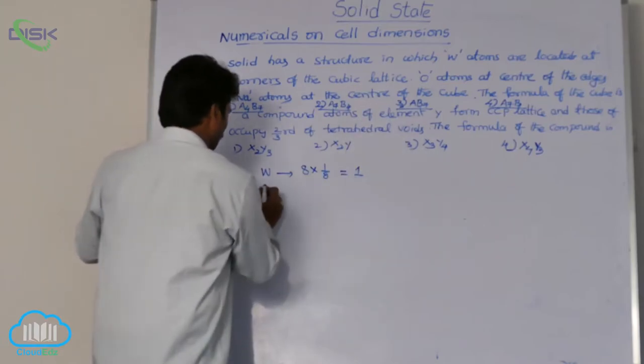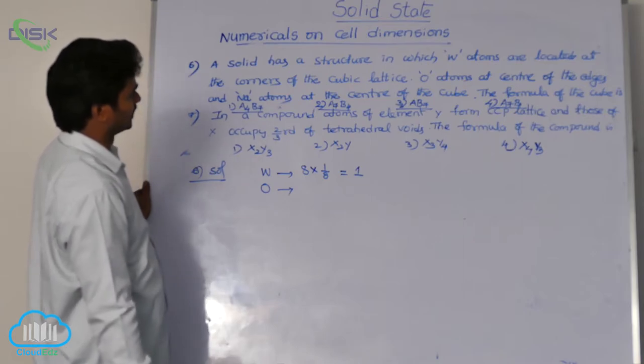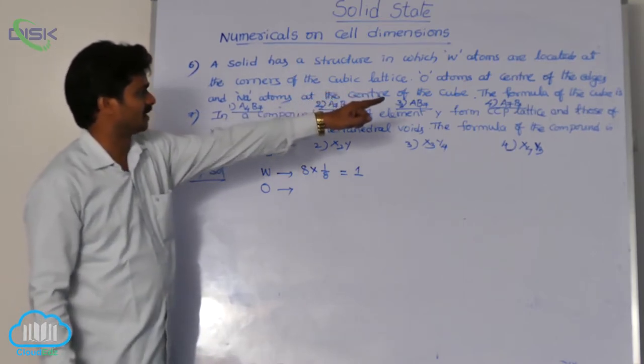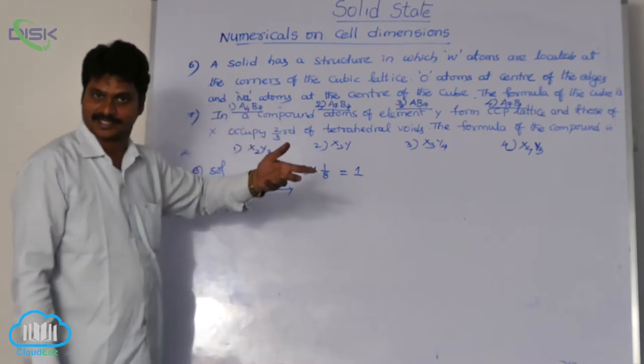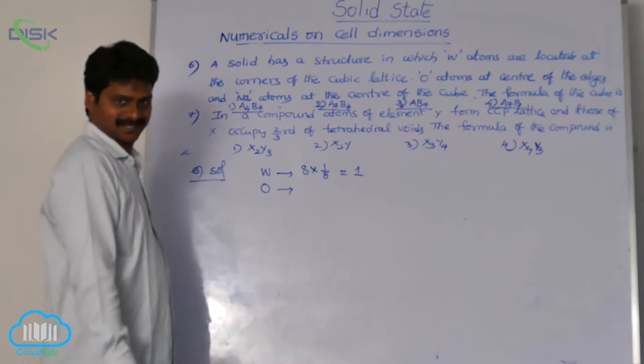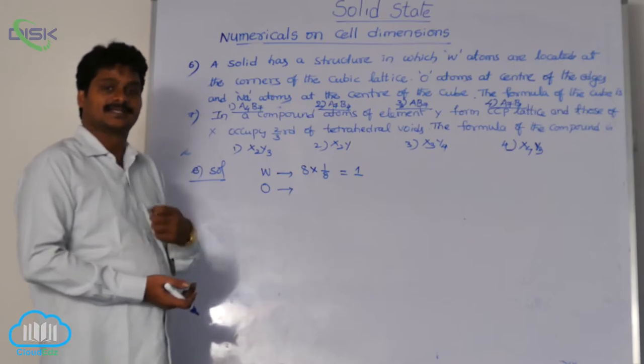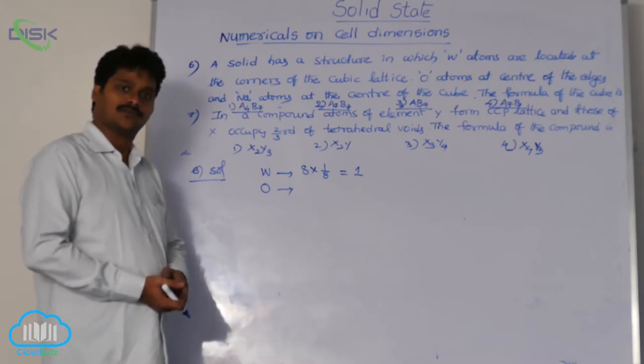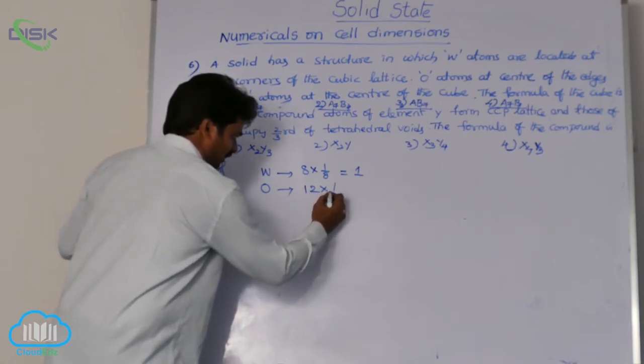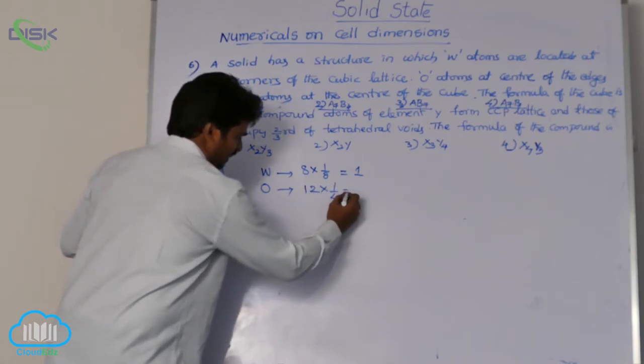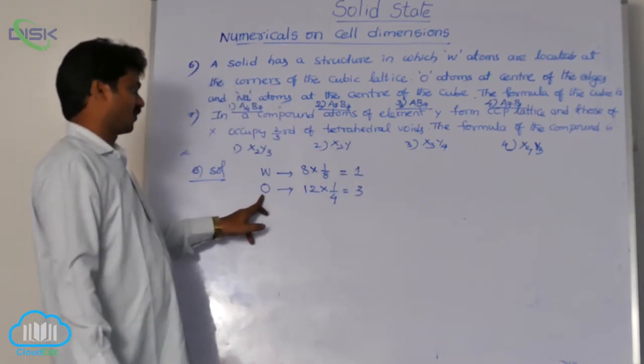What is the next atom? Oxygen. Oxygen atoms are at the center of edges. Not mentioned how many edges. That means, complete total 12 edges we have to consider. So a cube has how many edges? Yes, 12 edges. If each center contributes how much? 1 fourth. So here, edges we have 12. Each center atom contributes 1 by 4. That is why number of oxygen atoms 3 per unit cell.